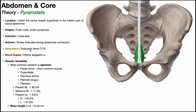The pyramidalis is innervated by the subcostal nerve, with nerve root contribution from T12, and its blood supply is via the inferior epigastric artery. This muscle is known to exhibit a large amount of genetic variability, and the most common variation is agenesis — meaning it simply doesn't form. The most common muscle to exhibit agenesis is actually the psoas minor of the posterior abdominal wall, but the pyramidalis is also very commonly absent.